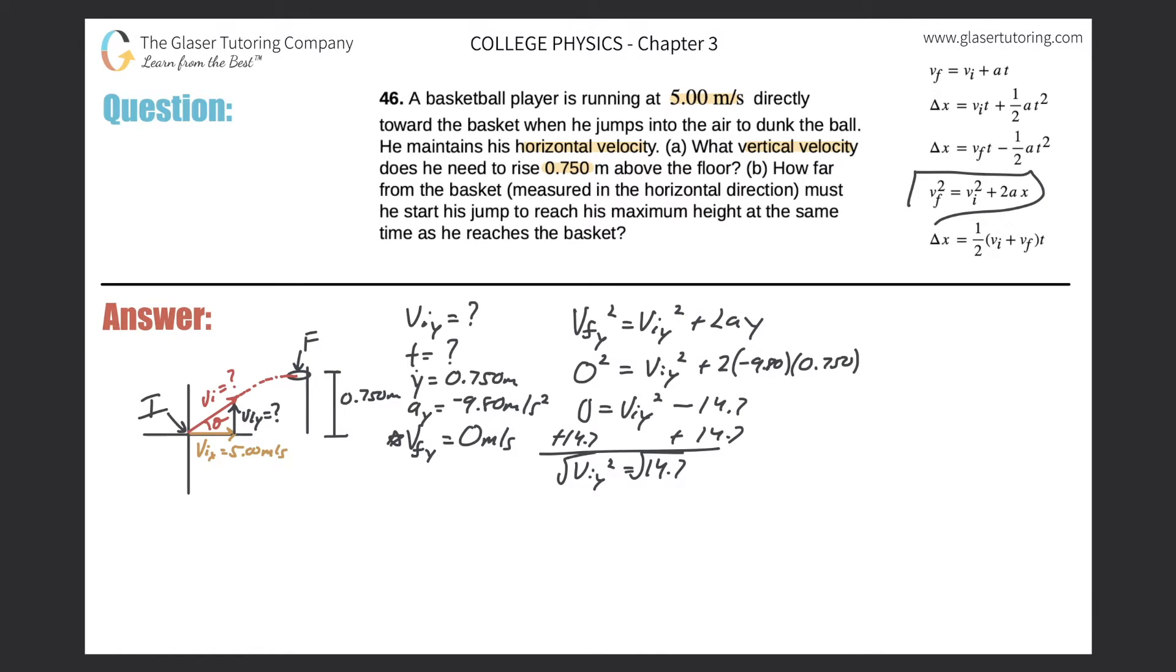Take the square root of both sides to get rid of the square, and now we will find our initial velocity. When you do take the square root of any number, you always get a plus and a minus answer. So this is 3.83 meters per second. Now which one is right, plus or minus?